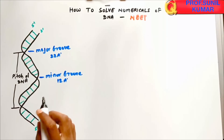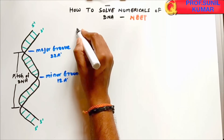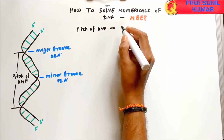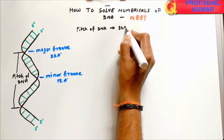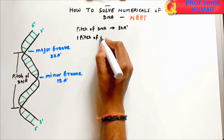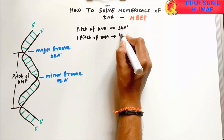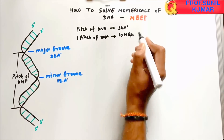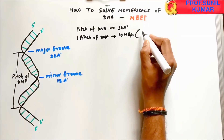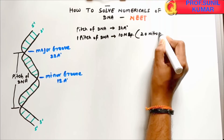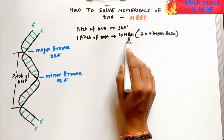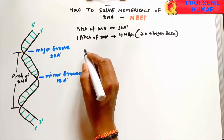One pitch of DNA is 34 Angstroms in length. In one pitch of DNA, there are 10 nitrogen base pairs present. Note that 10 nitrogen base pairs can also be called 20 nitrogen bases — in an exam, read your question carefully whether it asks for nitrogen base pairs or nitrogen bases.